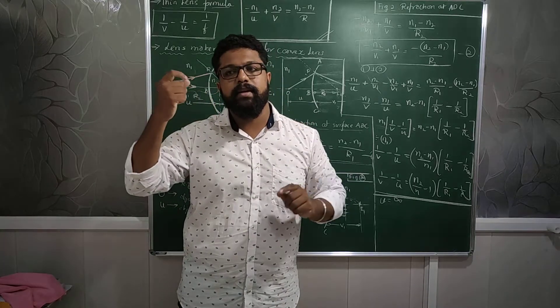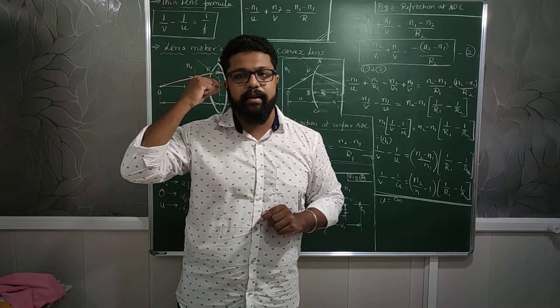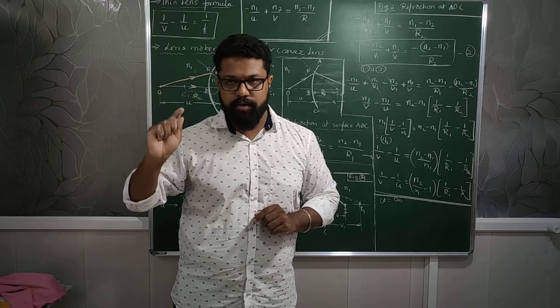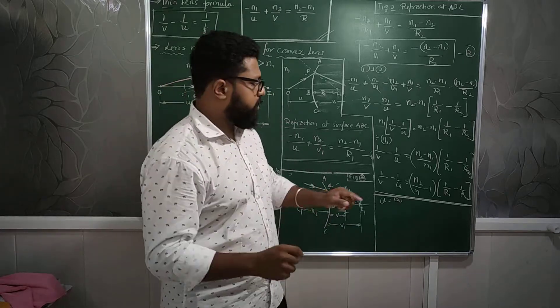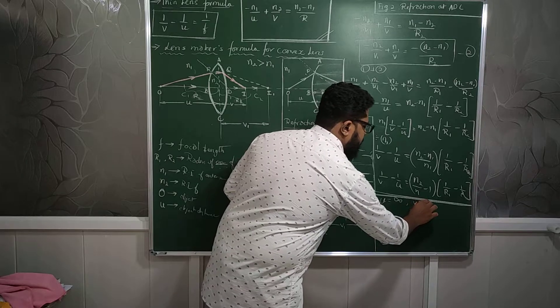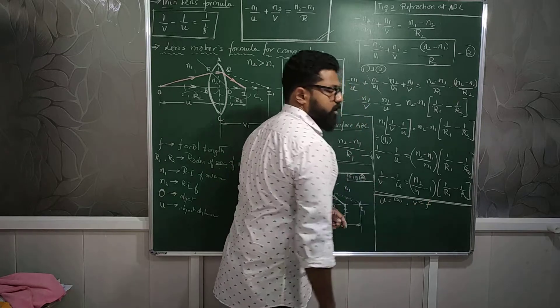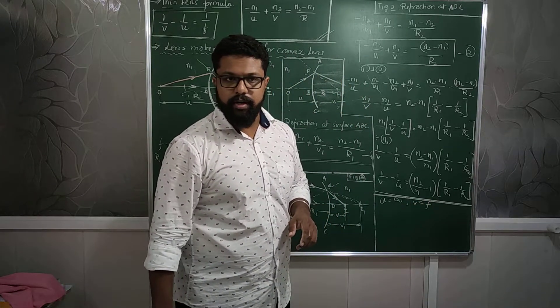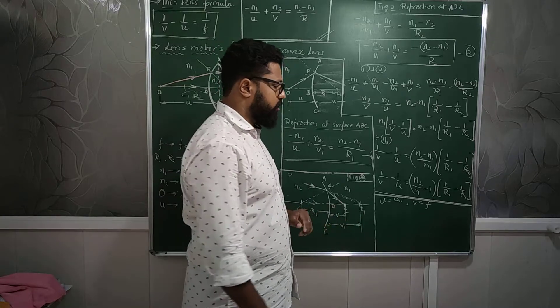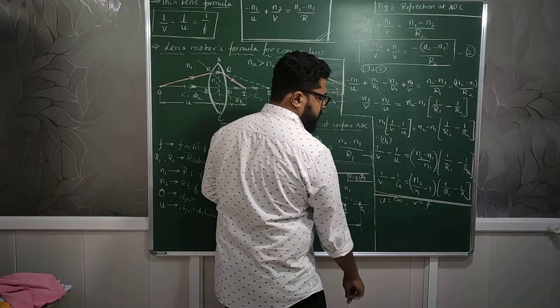And retina is nothing but a focus. So image should be formed at the focus point, which means the image distance should be focal length. Correct or not? Image distance should be focal length. So which means I will substitute these corresponding values.